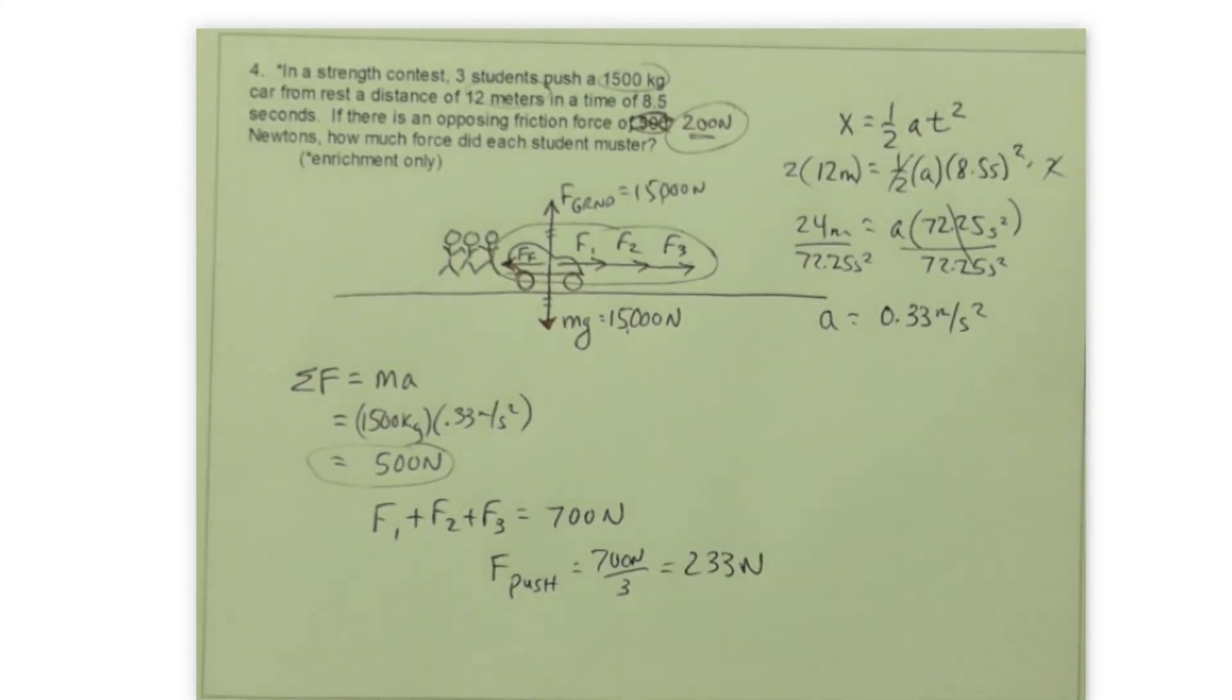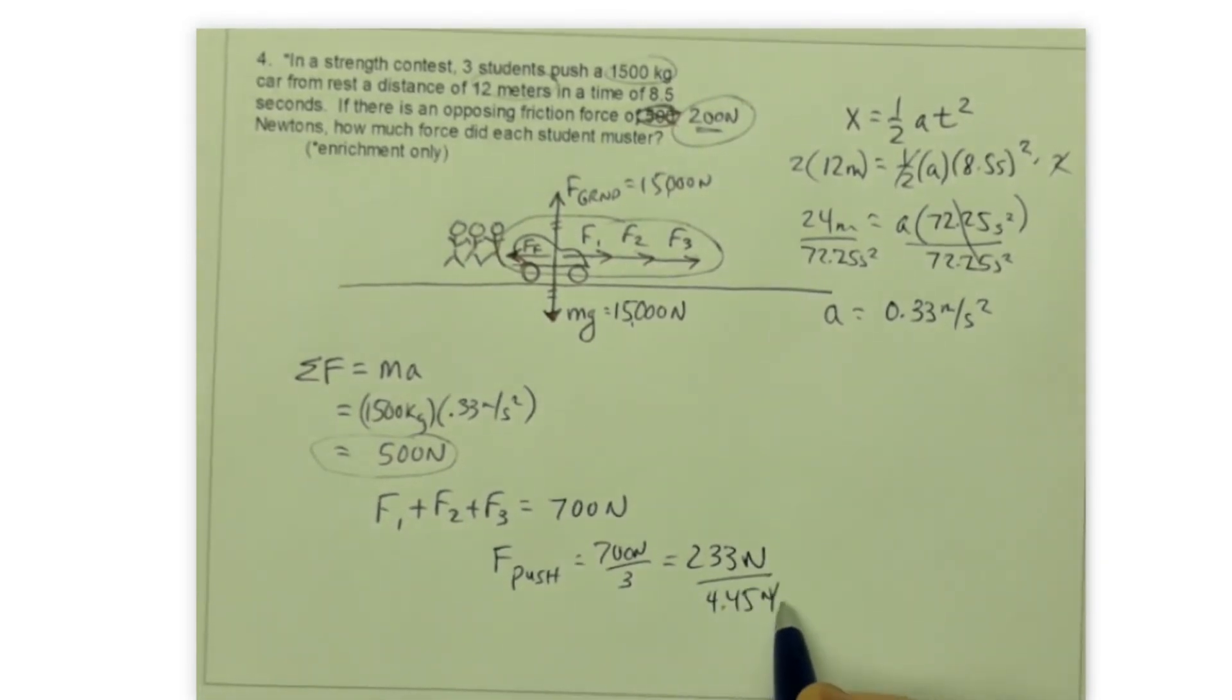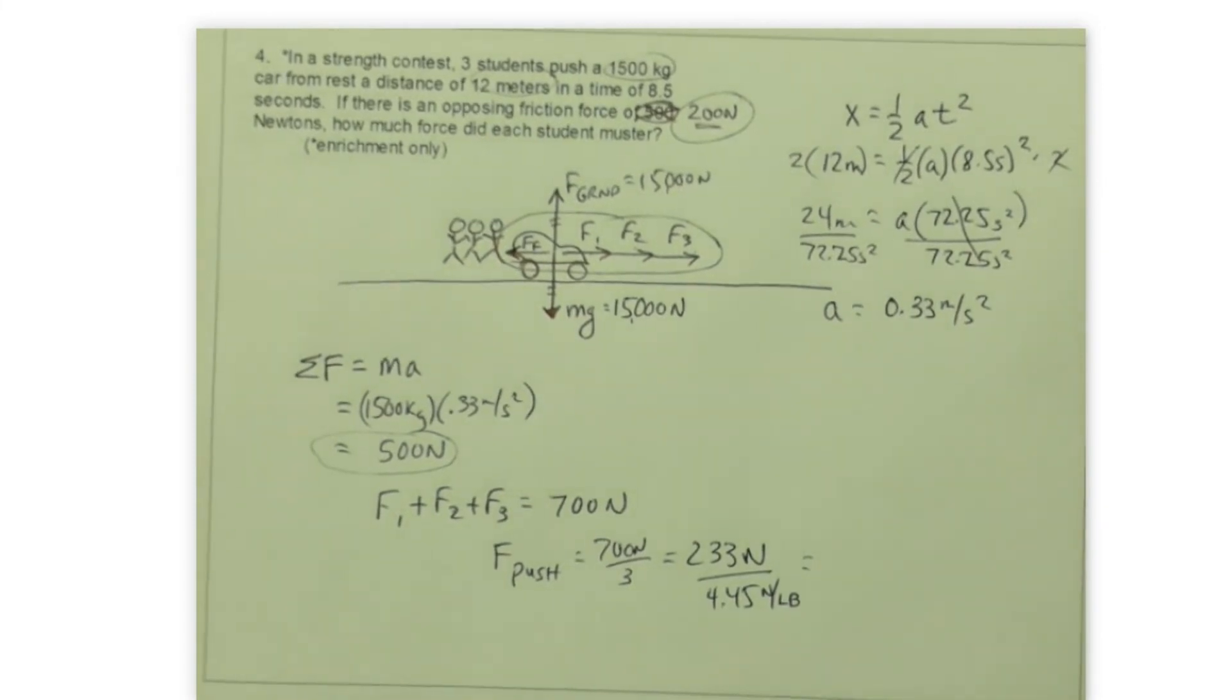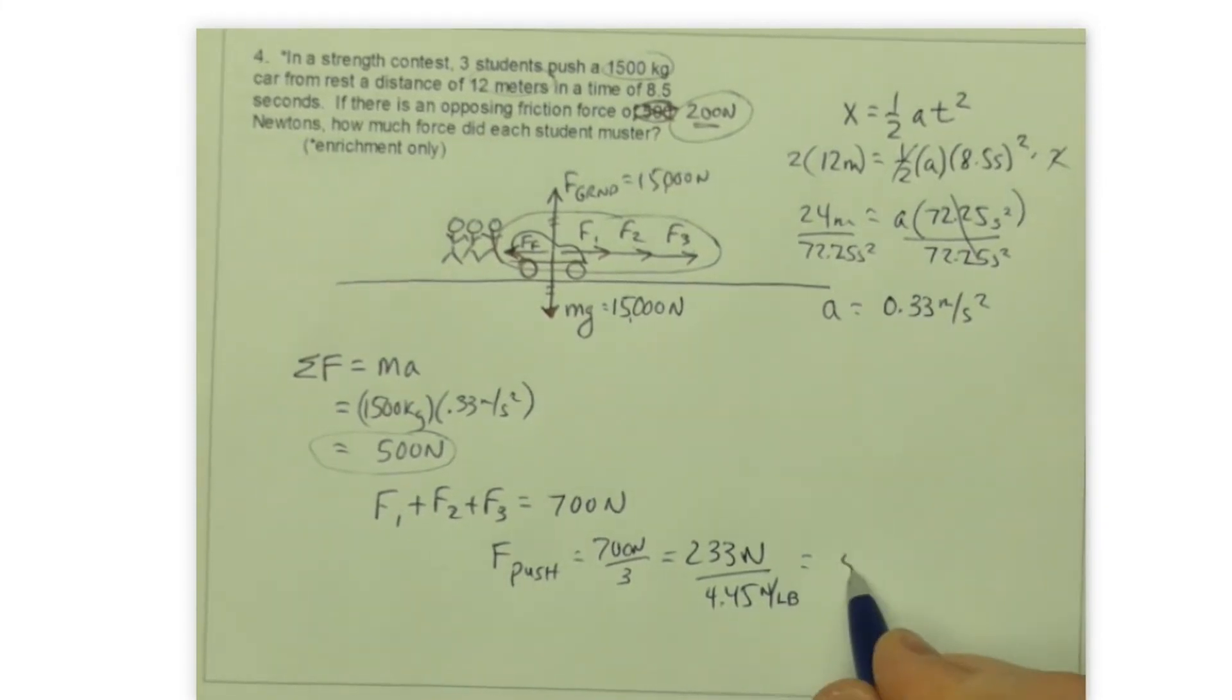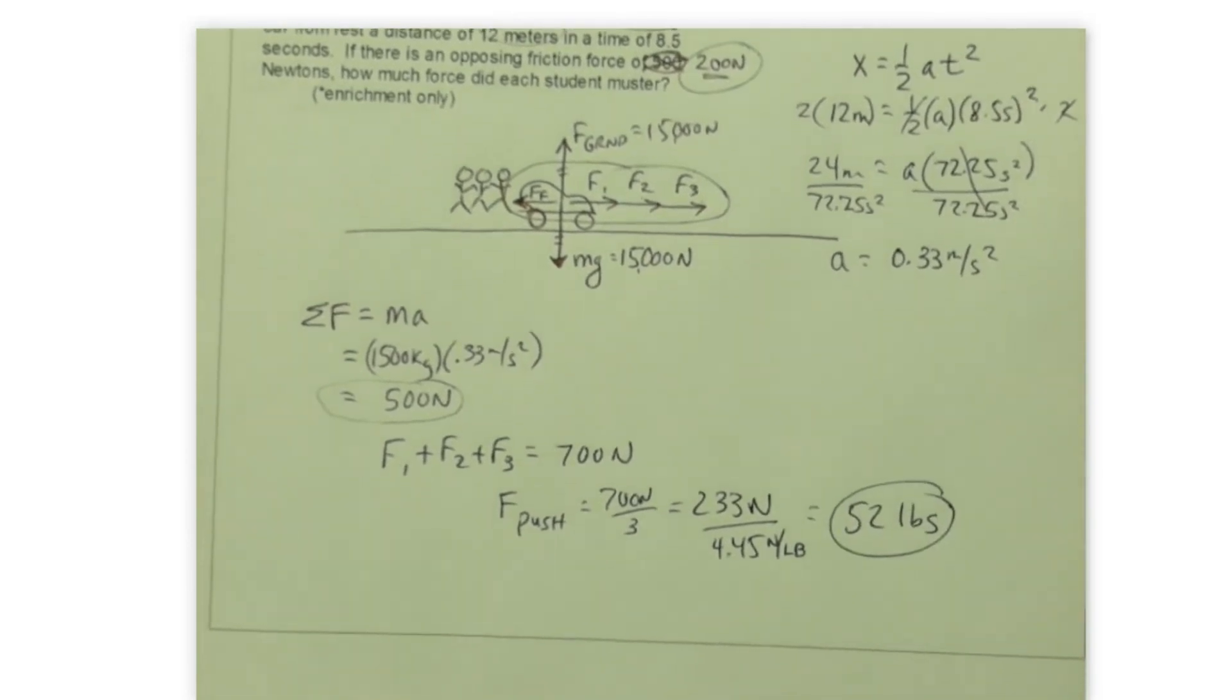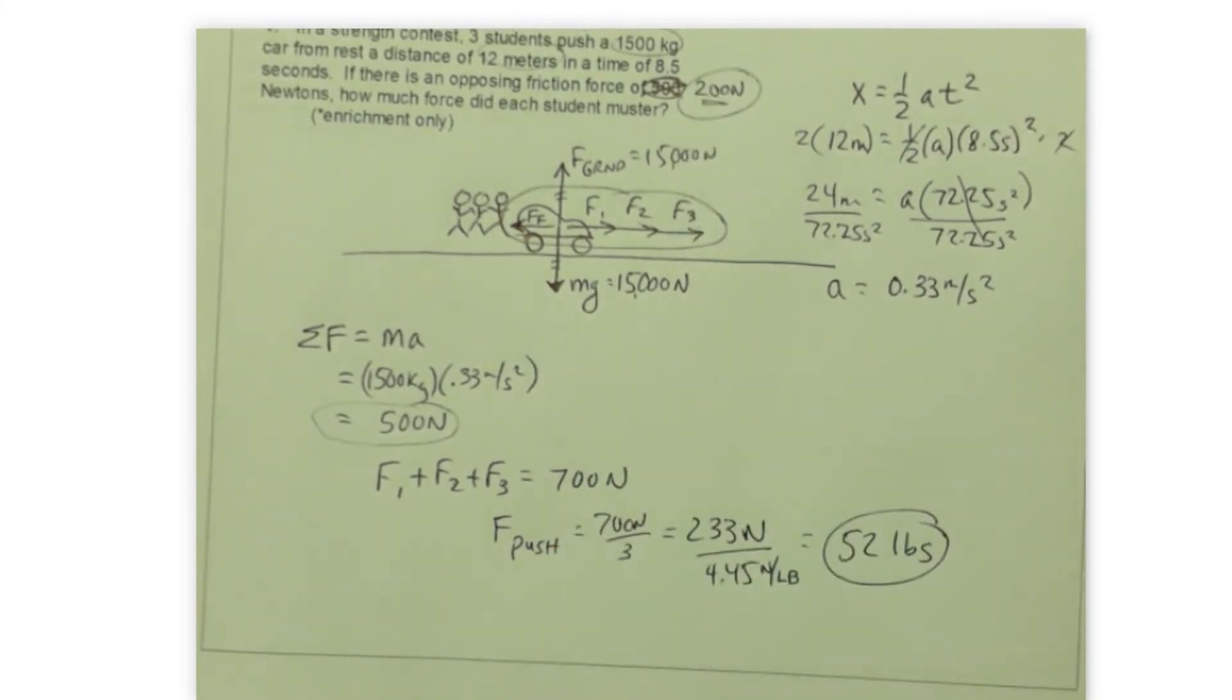Now most of us would like to put that in pounds because we don't know what newtons feels like, but we do know what pounds feels like. So if I divided that by 4.45 newtons per pound, that would give me about 52 pounds each. So for this particular example, the example that I'm solving in your packet provided you change that number to 200, each person would have pushed with about 52 pounds of force. And so that's how we'd go through and do that calculation.